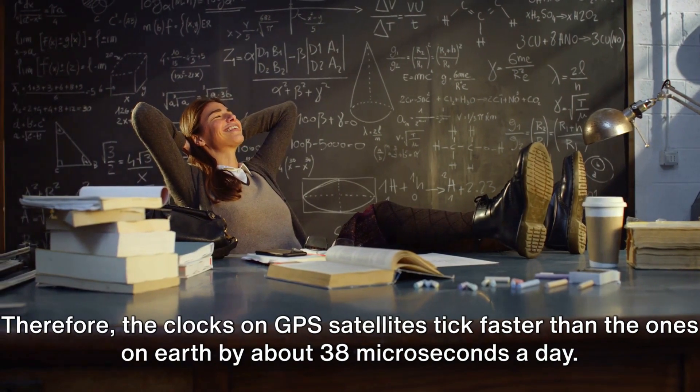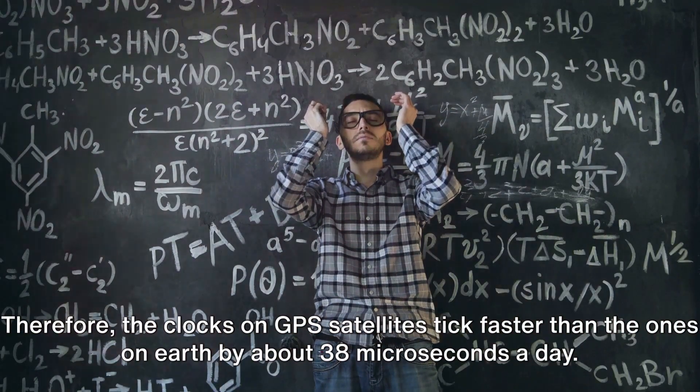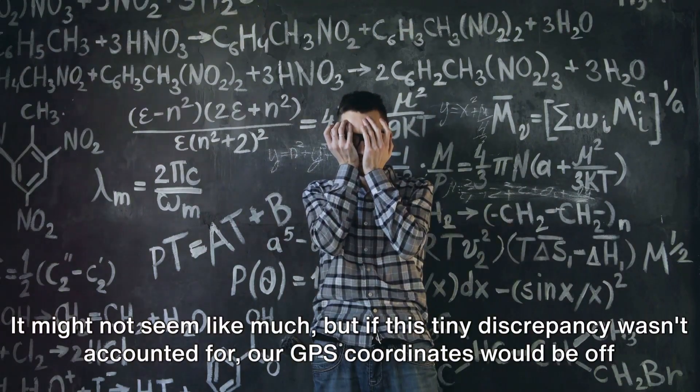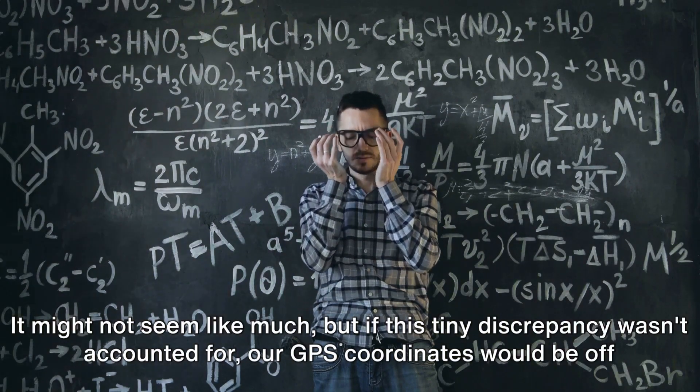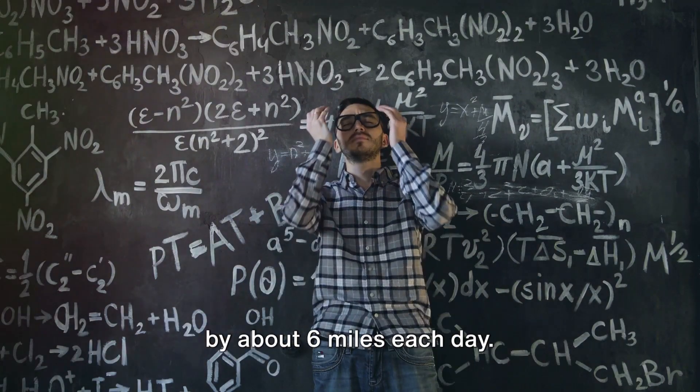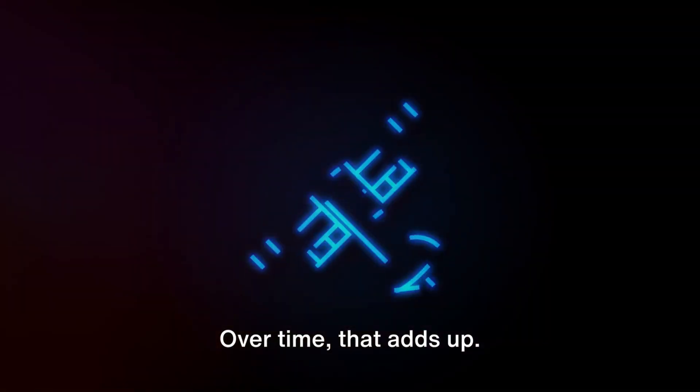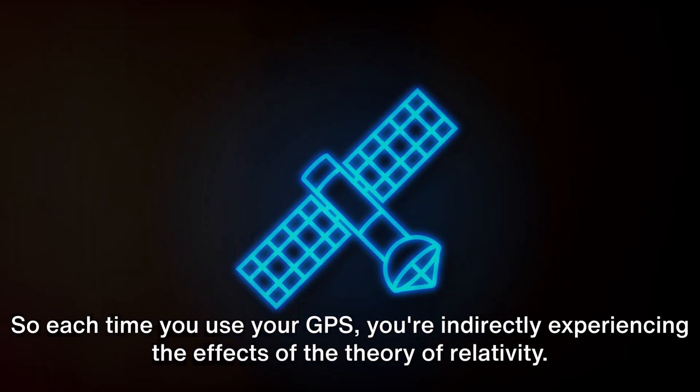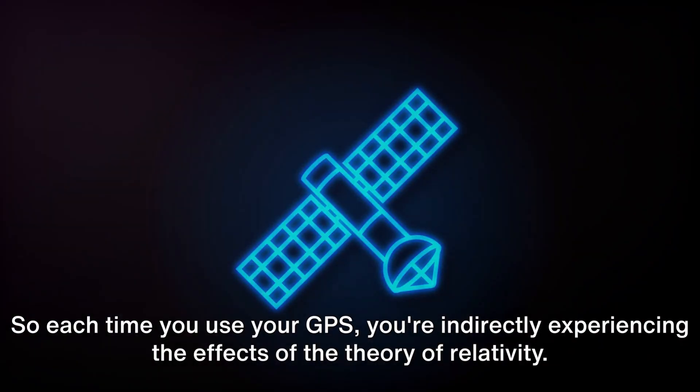Therefore, the clocks on GPS satellites tick faster than the ones on Earth by about 38 microseconds a day. It might not seem like much, but if this tiny discrepancy wasn't accounted for, our GPS coordinates would be off by about 6 miles each day. Over time, that adds up. So each time you use your GPS, you're indirectly experiencing the effects of the theory of relativity.